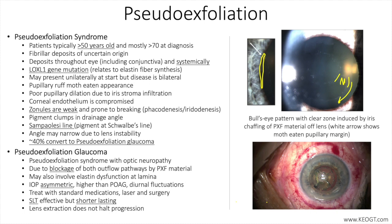The angle deposits are classically in clumps or lumpy-bumpy, compared to the velvety or even nature seen in pigmentary glaucoma. The deposits collect iris pigment cells and become pigmented over time. The angle also has the classic Sampaolesi line, which is pigment accumulation anterior to and on Schwalbe's line. The obstruction of PXF material is mainly mechanical with plugging of the outflow pathway.